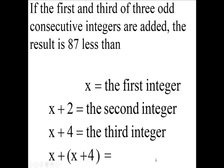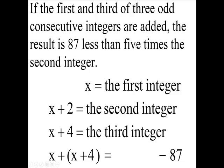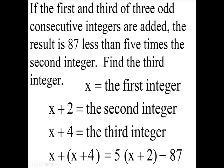87 less than, so we're going to take away 87 from what? From five times the second. So we want five times the second integer. And what is the second integer? x plus this number here. So here is your equation. And we want to know what is the third integer.